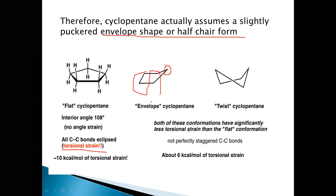Cyclopentane can also attain a half-chair conformation, where three carbon atoms — numbered one, two, three — are in one plane, the fourth carbon atom is above the plane, and the fifth carbon atom is below the plane of the molecule. This is nothing but a half-chair form. There is relief from the torsional strain in this, but it's not perfectly staggered C-C bonds again.